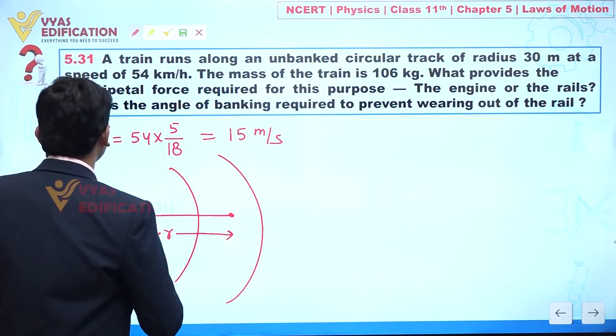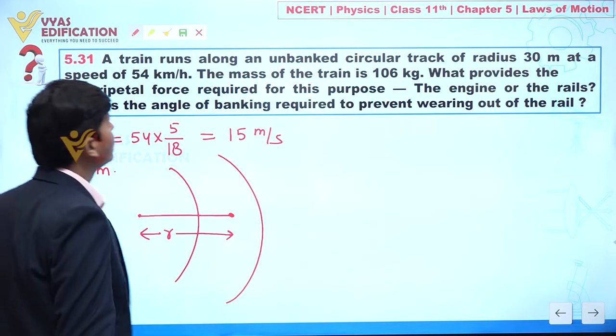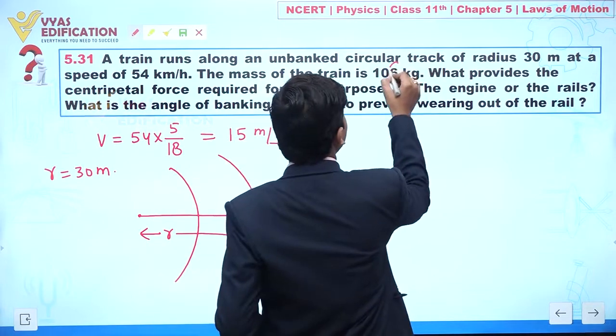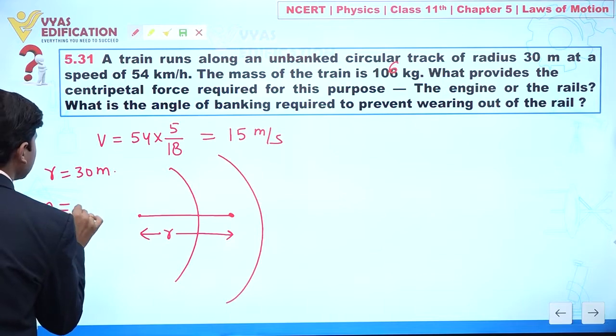The mass of the train is given to you as 10 to the power 6 kilograms. So we can see the mass of the train is given to you as 10 to the power 6 kilograms.